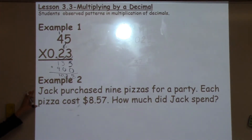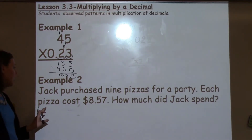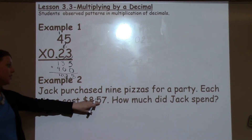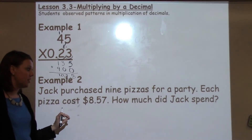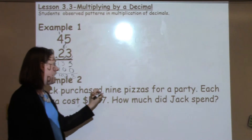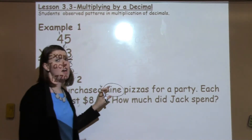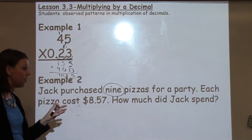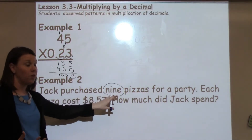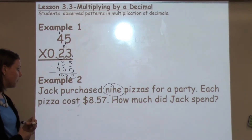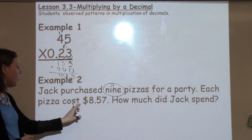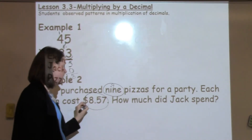We also worked with word problems today. For example number 2, it says Jeff purchased 9 pizzas for a party, and each piece costs $8.57. How much did he spend? This is a tricky one because the quantity is not written as a numeral but in words — that's the number 9. I'm going to write 9 up there so we know that it's what we're going to multiply with.